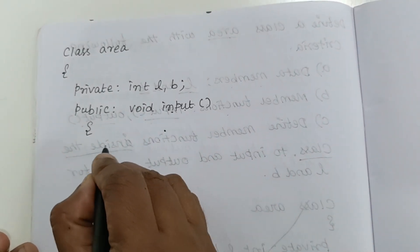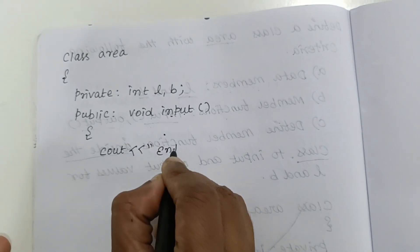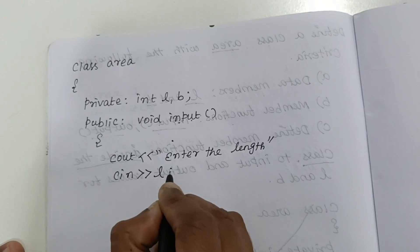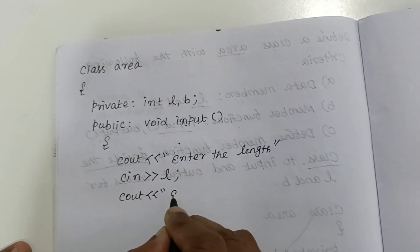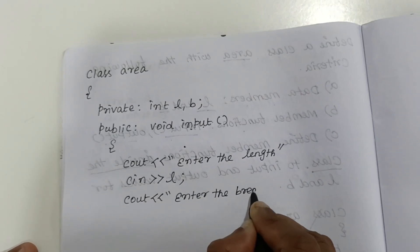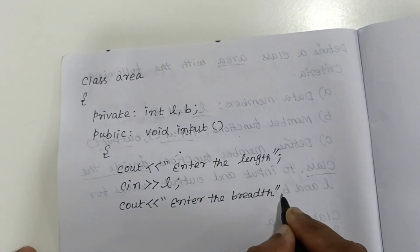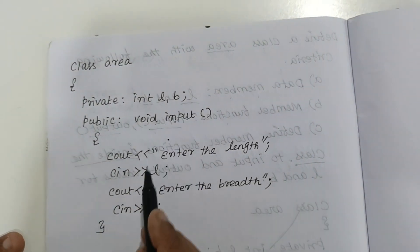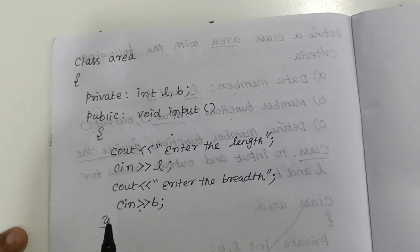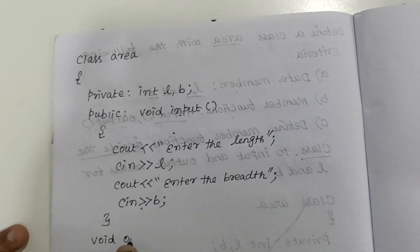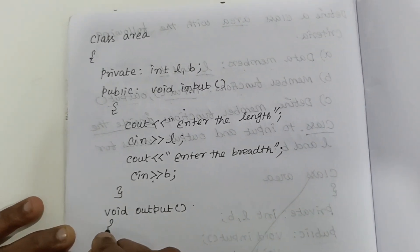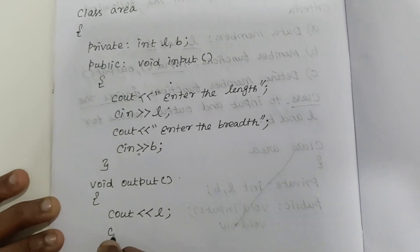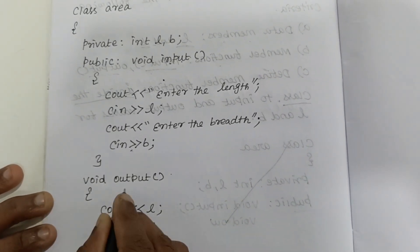You write the functionality immediately inside the class without closing it. For the input function: cout << 'Enter the length'; cin >> l; then cout << 'Enter the breadth'; cin >> b; Close the input function. Then write the output function inside the class: void output, open the bracket, and just display the result: cout << l; cout << b; Then close the output function.